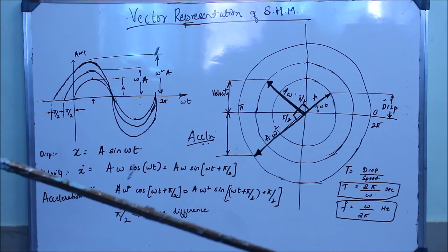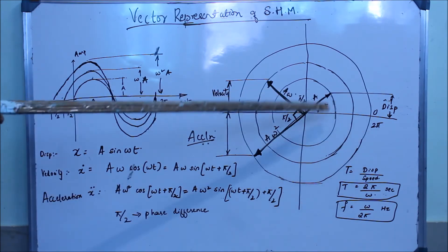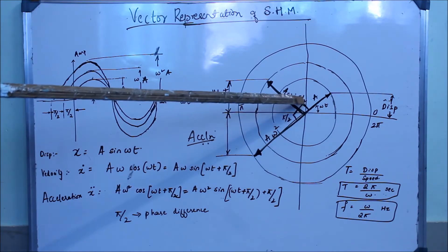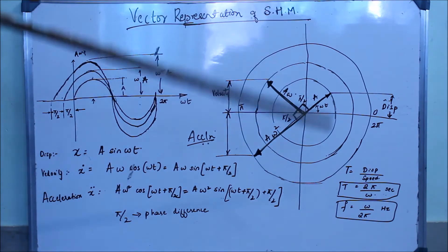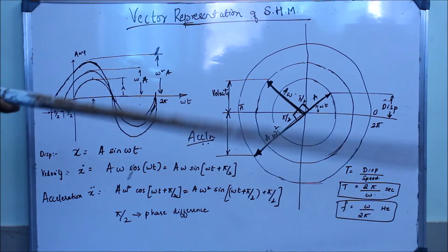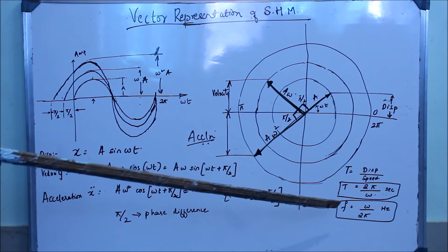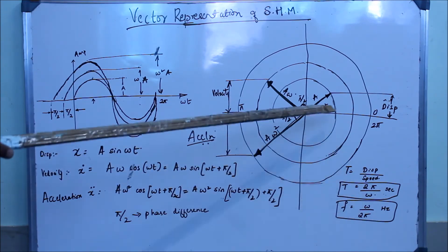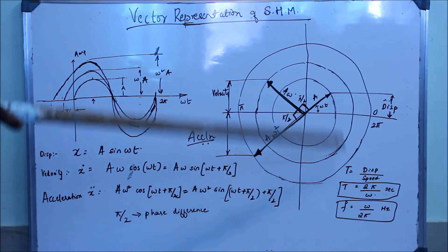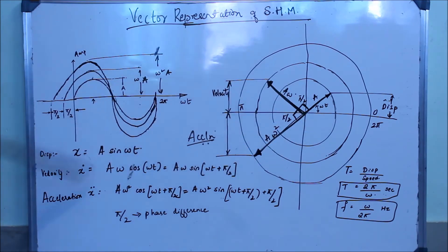After some time t, the vector makes an angular displacement of ωt. This comes from the analogy that distance equals speed times time, where angular distance equals angular velocity ω times time t. That gives us the displacement vector.